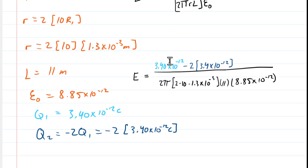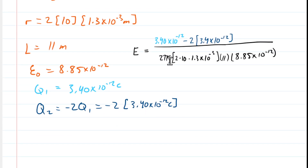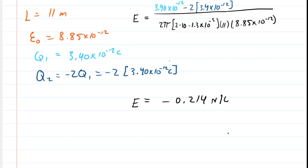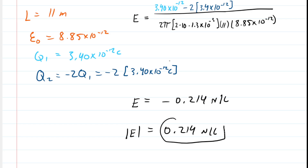After plugging everything in and simplifying, the electric field turns out to be about negative 0.214 newtons per coulomb. Part A just wanted the magnitude, so we take the absolute value and get 0.214 newtons per coulomb. That is the correct answer to part A.